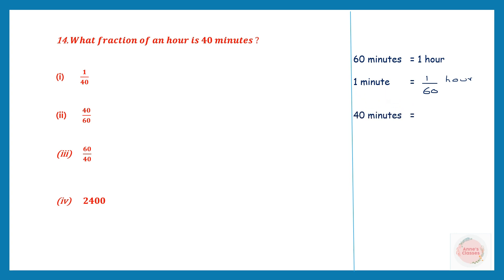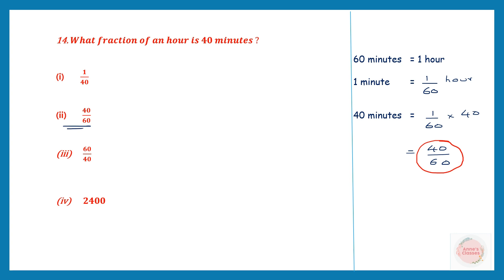For 40 minutes, it is 1/60 into 40, which equals 40/60. Looking at the options, 40/60 is option 2, so option 2 is our answer.